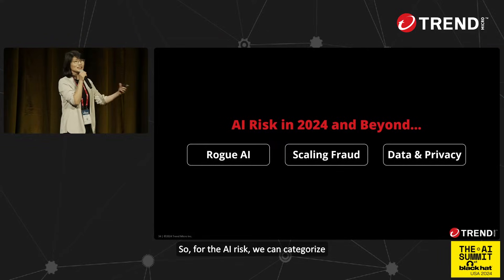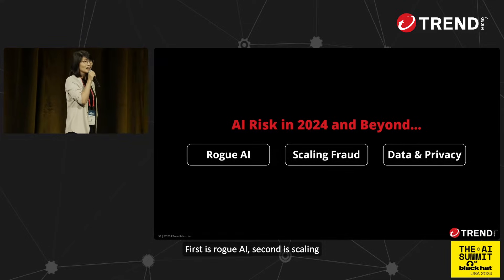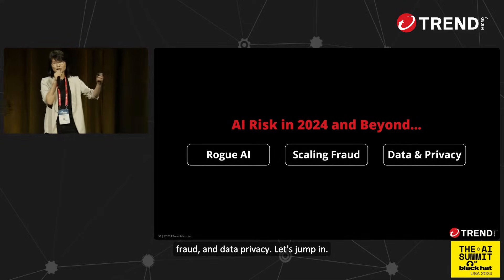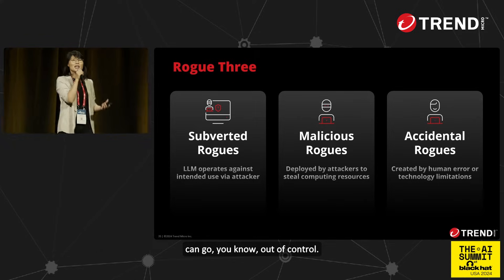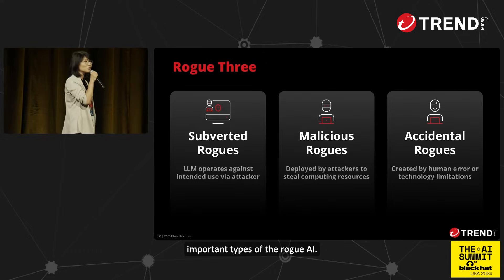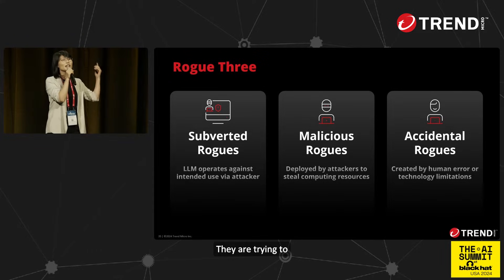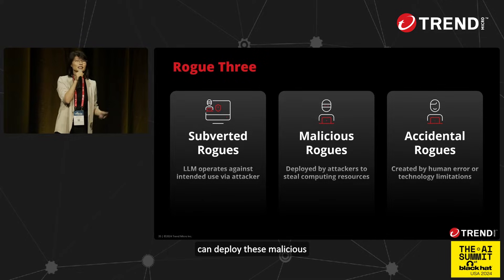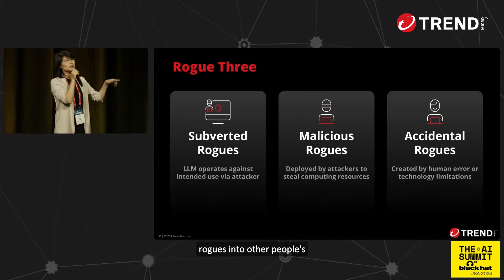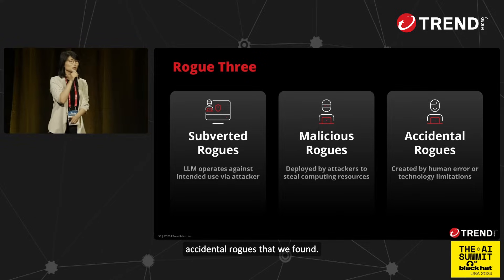For AI risk, we can categorize them into three key categories. First is rogue AI. Second, scaling fraud. And third, data privacy. Rogue AI is AI that can go out of control, and there are three important types. One is subverted rogues — like prompt injection and jailbreaks — which try to manipulate the large language model. Second, malicious rogues, where attackers deploy malicious AI into other people's systems. And third, accidental rogues, caused by human error or system limitations.